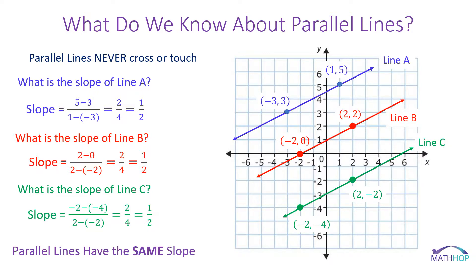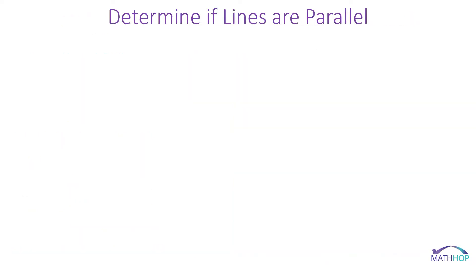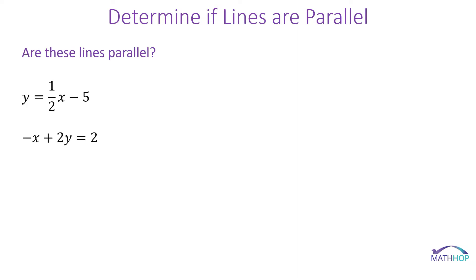If we think about that, it really should make sense. If parallel lines never, ever, ever touch or cross, they should rise or fall at the same rate — that would mean they would have the same slope. Now that we know parallel lines have the same slope, we can determine if two lines are parallel.